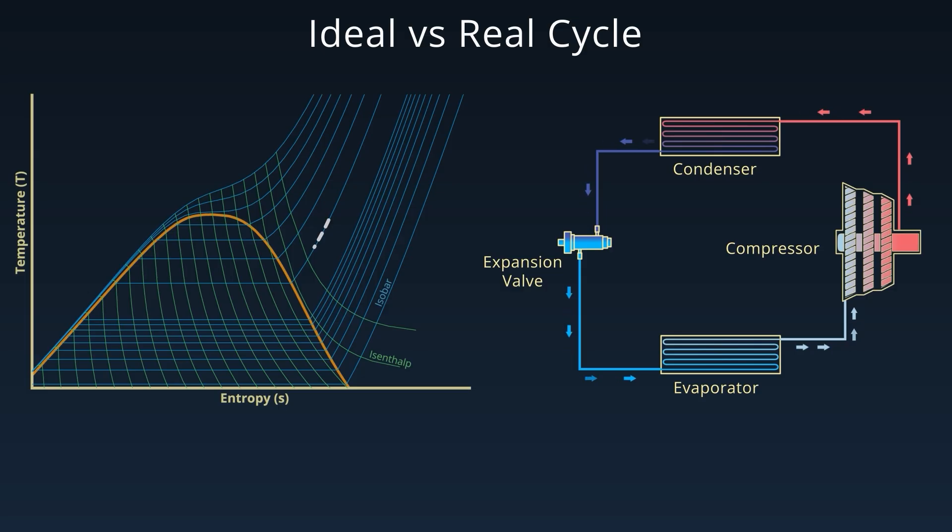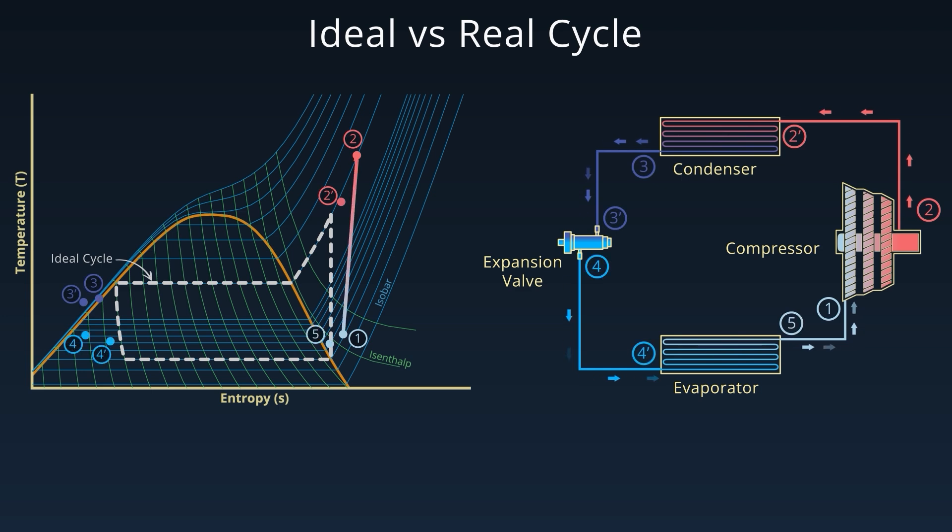In theory, the vapor compression cycle follows a clean ideal path on thermodynamic diagrams. But in practice, the actual cycle deviates from the ideal.